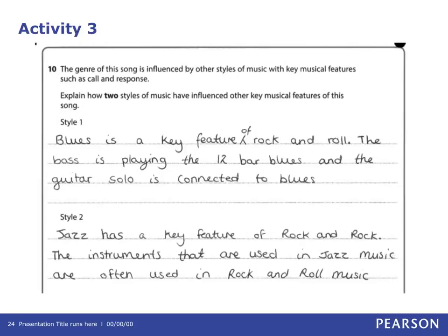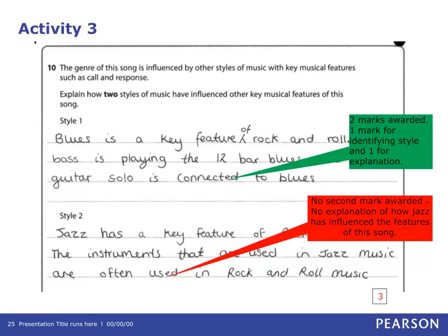Activity 3 refers to Question 10 from Section A. The question reads: 'The genre of this song is influenced by other styles of music with key musical features such as call and response. Explain how two styles of music have influenced other key musical features of this song.' The learner has correctly identified two styles — blues and jazz. While the first response relates to how this style has influenced the features of the song, the second point does not include an explanation to gain the additional mark. The learner has therefore gained a total of three marks.